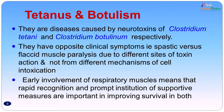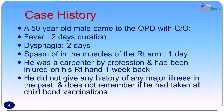Now let us discuss both these diseases one by one. We will start first with tetanus. A 50-year-old male came to the outpatient department with complaints of fever of 2 days duration, dysphagia of 2 days duration, and spasm in the muscles of the right arm of 1 day duration. He was a carpenter by profession and had been injured on his right hand 1 week back. He gave no history of any major illness in the past and did not remember if he had taken all his childhood vaccinations.